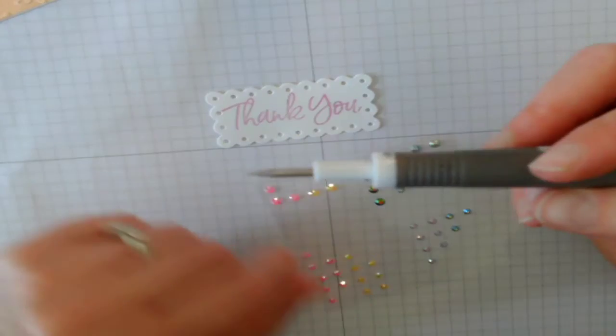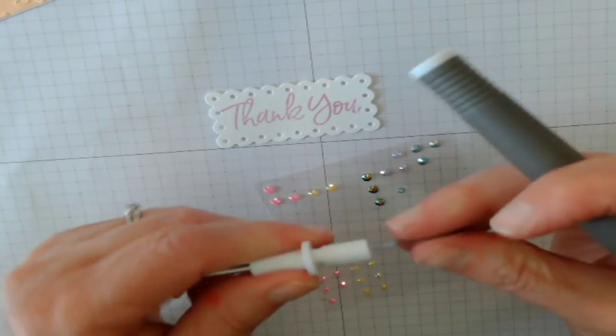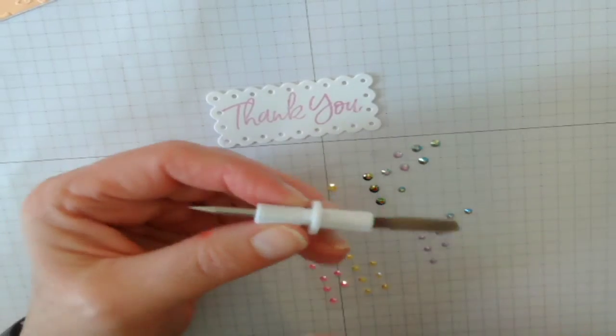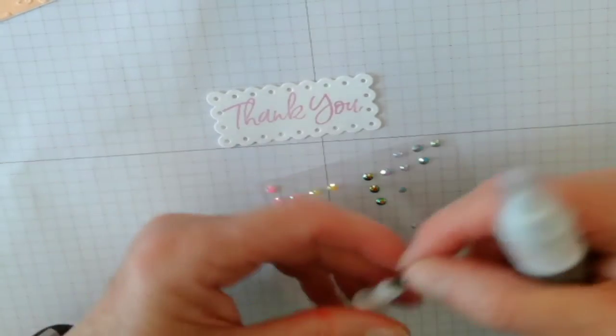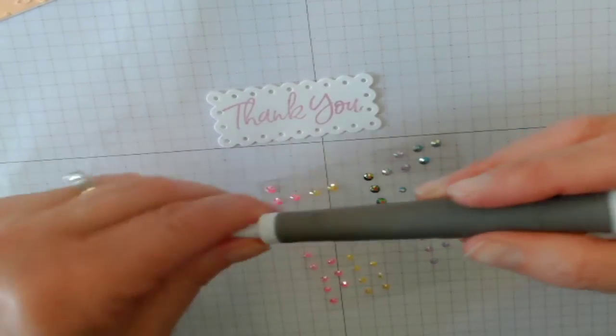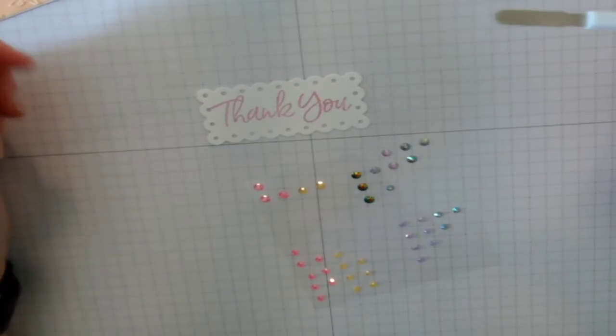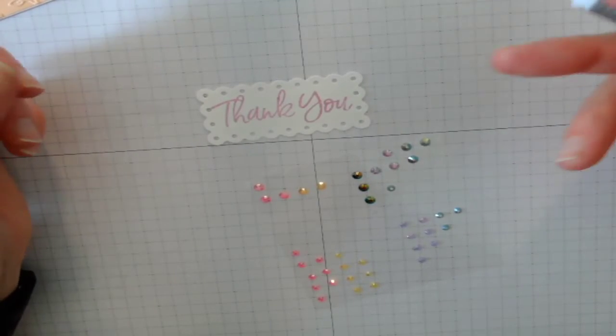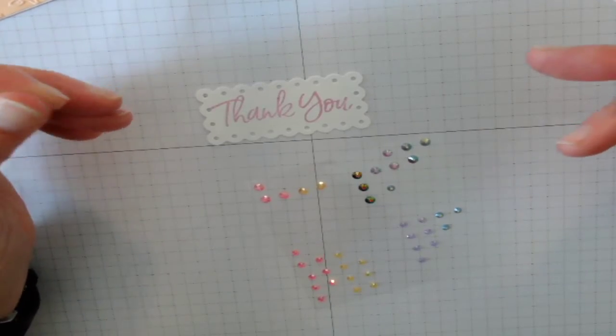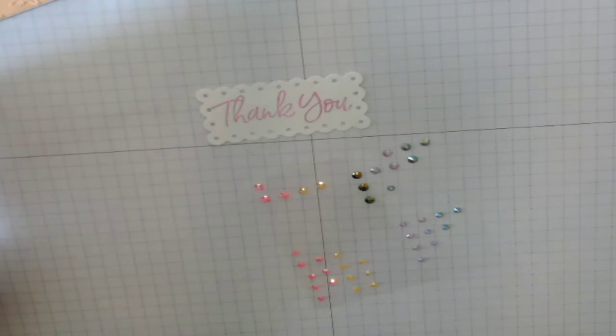This pick tool comes with different options to work with. This is a piece that has a pointy end and a flat end. And when I remove these gems, I use the flat end. You can try and pick them off with your fingers, but they'll stick to your finger, they'll fall and go all over the place. They're impossible to find again. So you're just better off using the tool.